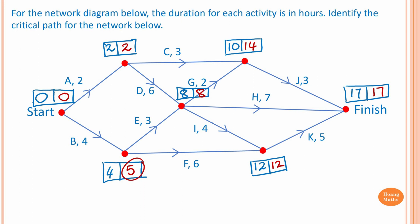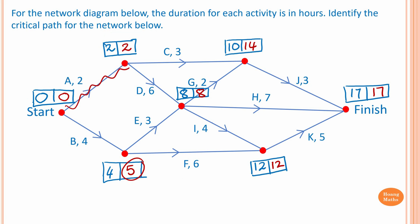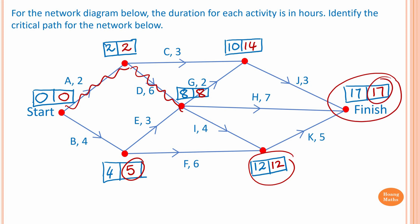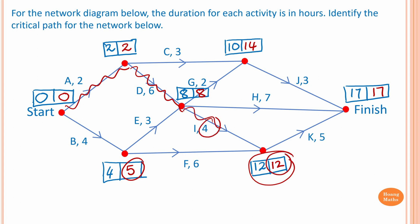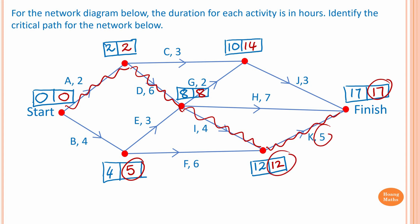To work out the critical path, the float time is zero — latest time minus earliest time equals zero. Be careful: seventeen minus seven gives ten, which does not equal eight, so that is not the critical path. But twelve minus four is eight, so that is the critical path. Also, seventeen minus five is twelve, confirming that path is critical. Therefore the critical path for this project is A, D, I, and K.